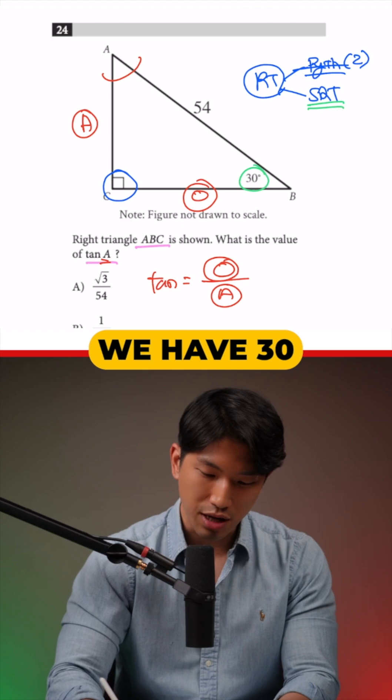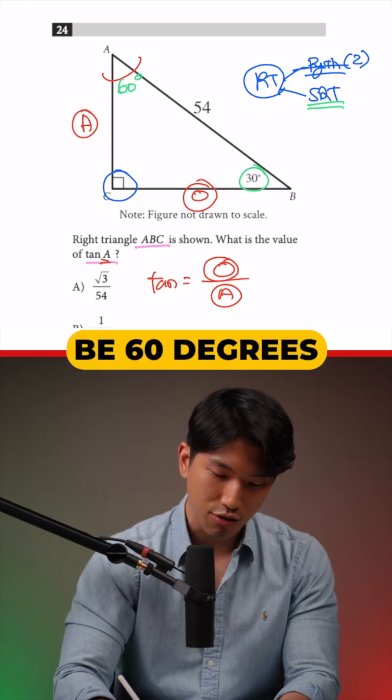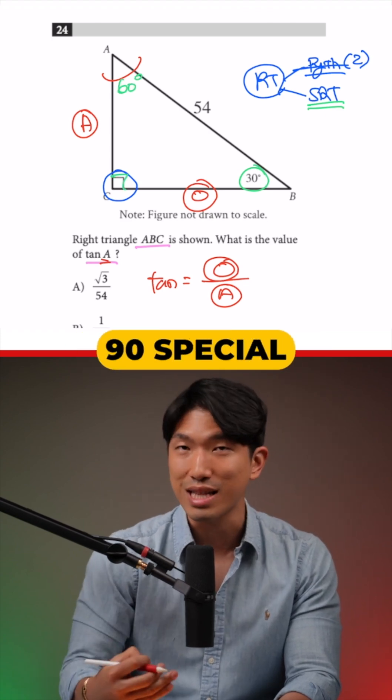And luckily for us, we have 30 degrees in there, which means it's going to be 60 degrees here and 90 here, 30, 60, 90 special right triangle.